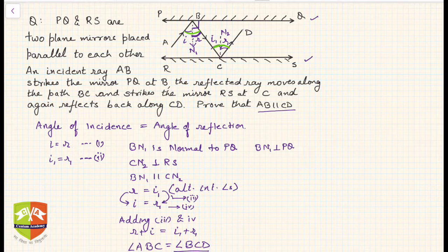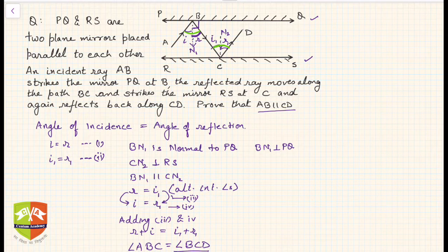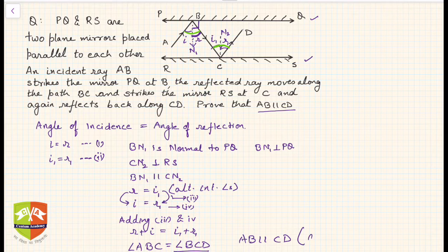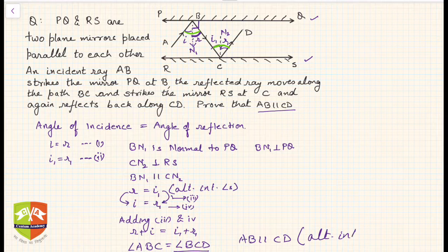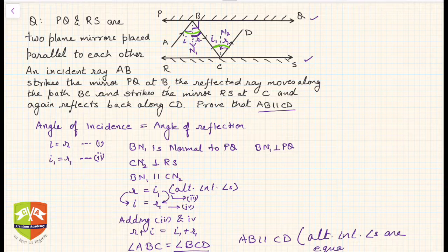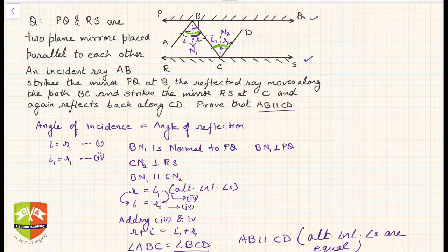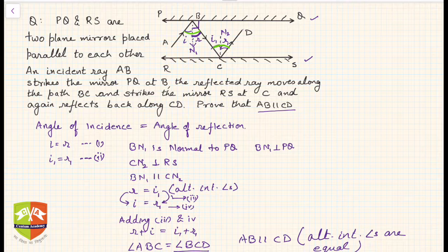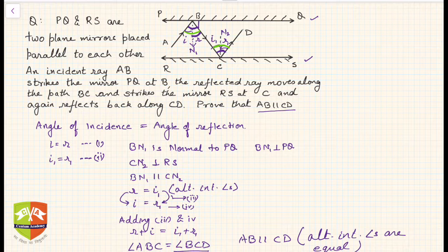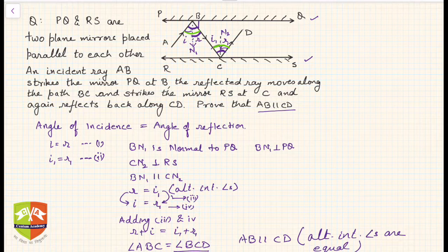If you see, this is nothing but AB and CD are two lines and BC is a transversal, and they look like alternate interior angles. So hence you can say AB is parallel to CD, because alternate interior angles are equal. ABC equals BCD. Hence we could prove that AB is parallel to CD.